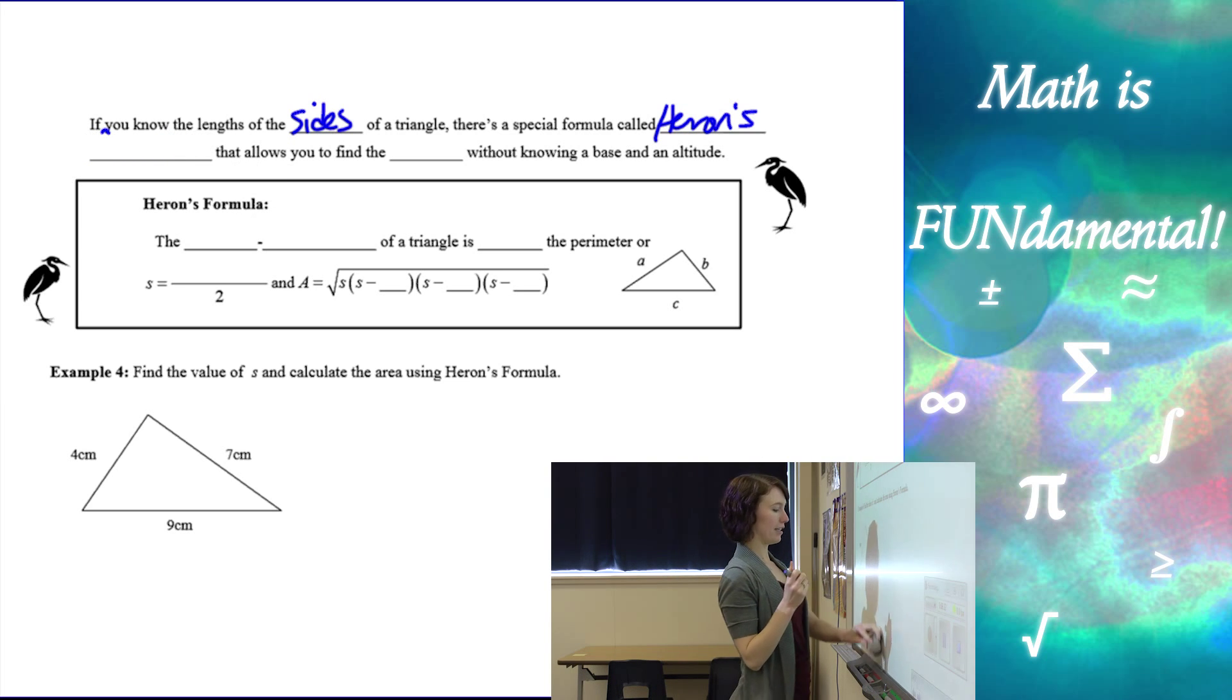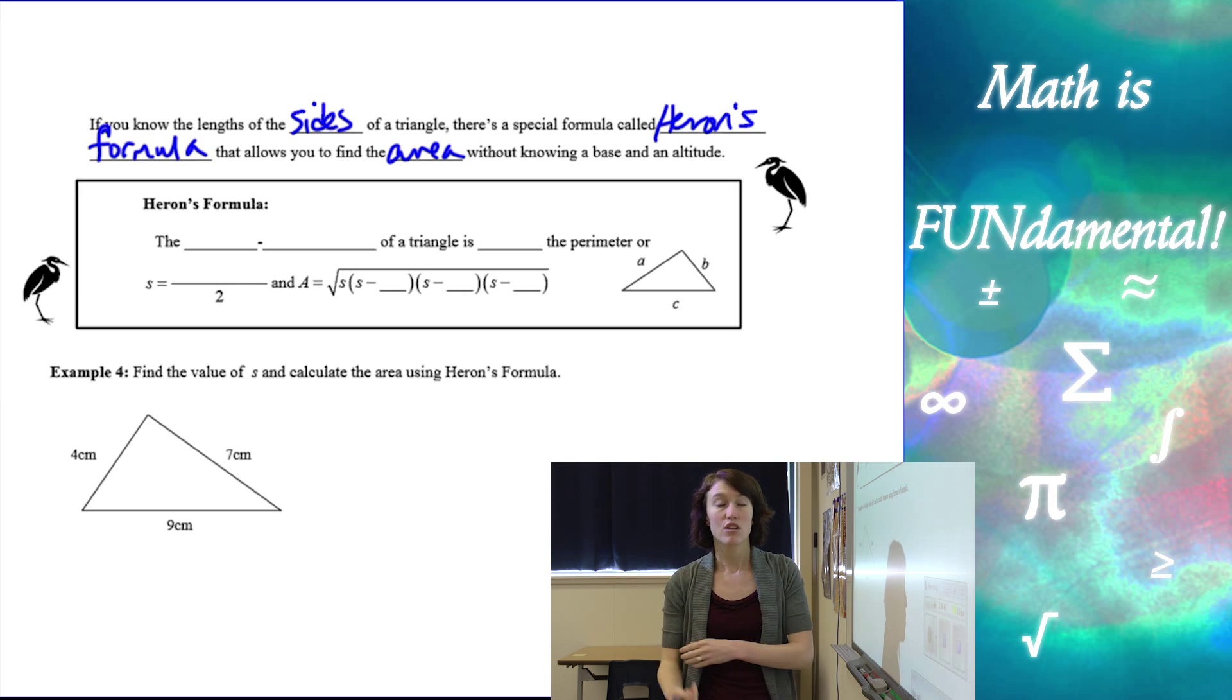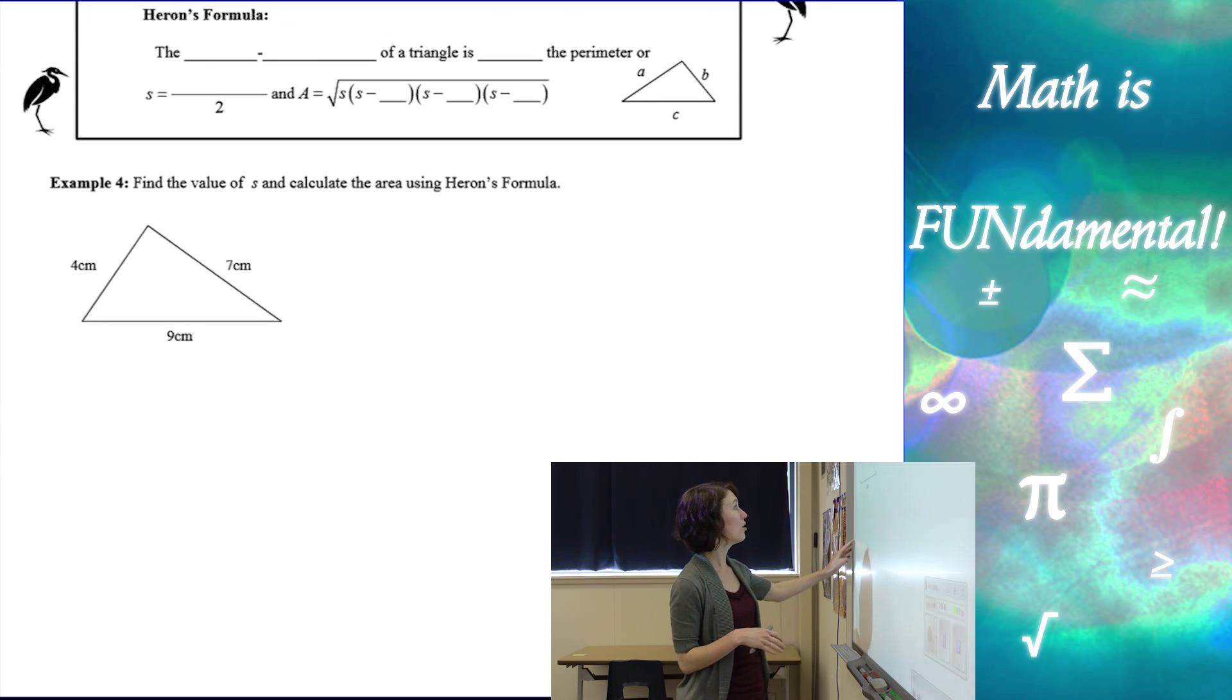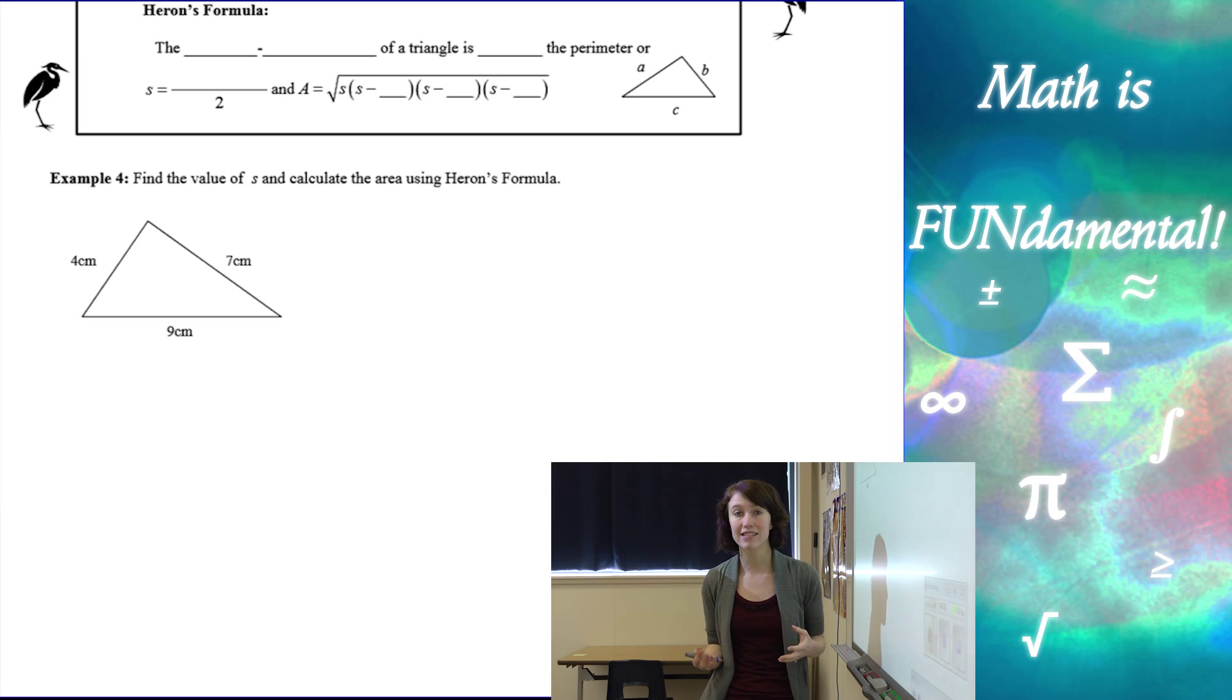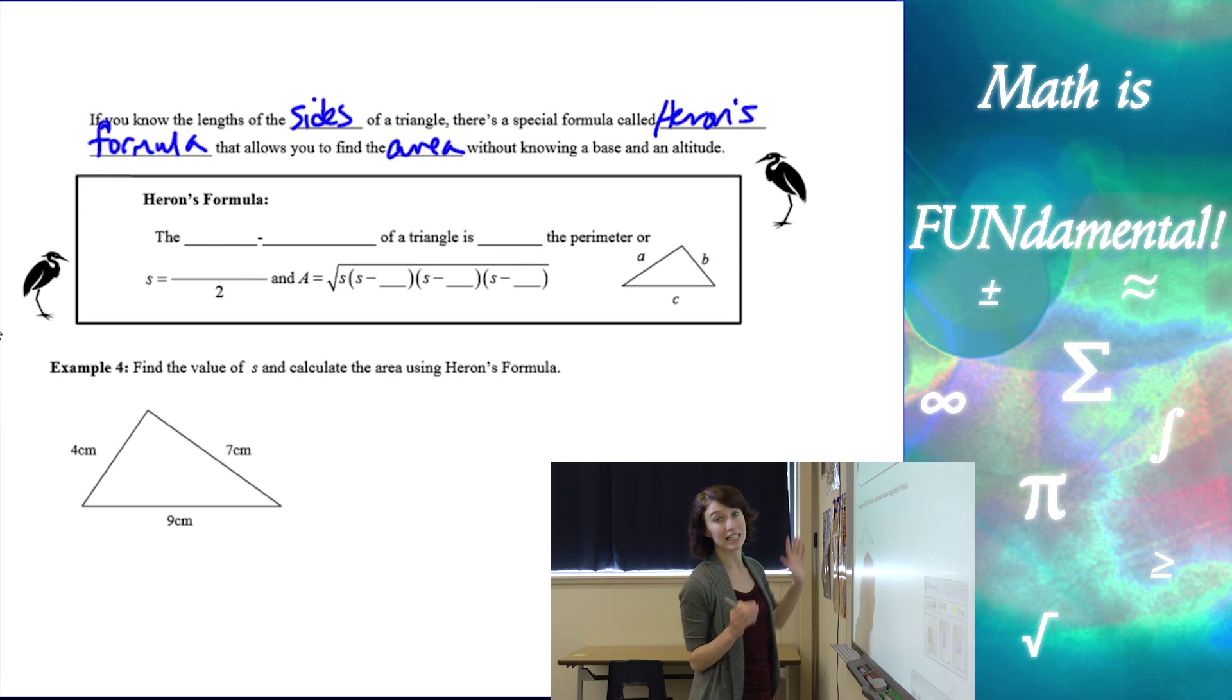Heron's formula that allows you to find the area without knowing a base or the height. So sometimes we'll have a triangle like you see here in the example, where I have all three lengths of the sides, but I don't know how much this height is. And I really have no way of finding that out since I'm not given any angles or anything else to work with. So this formula gives us a way to find the area without needing the height.